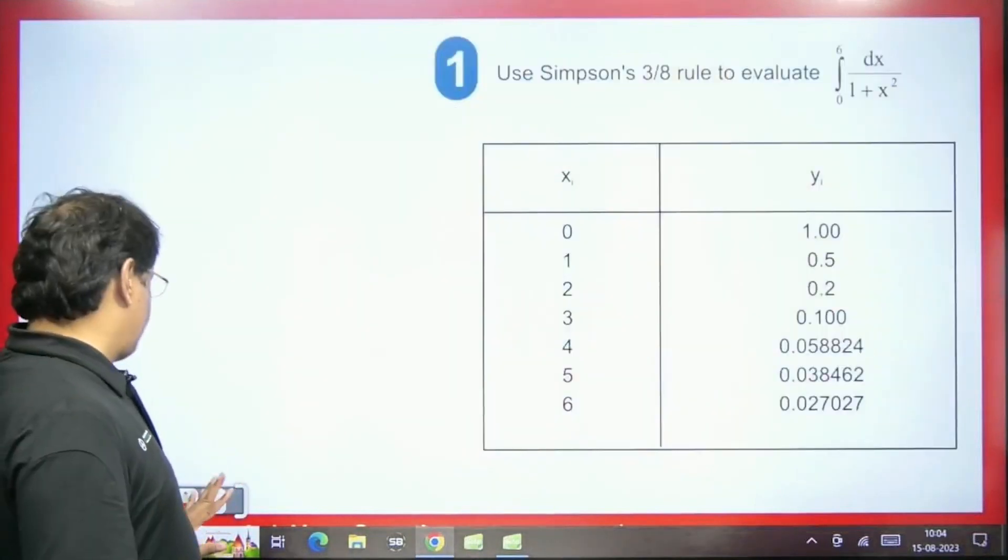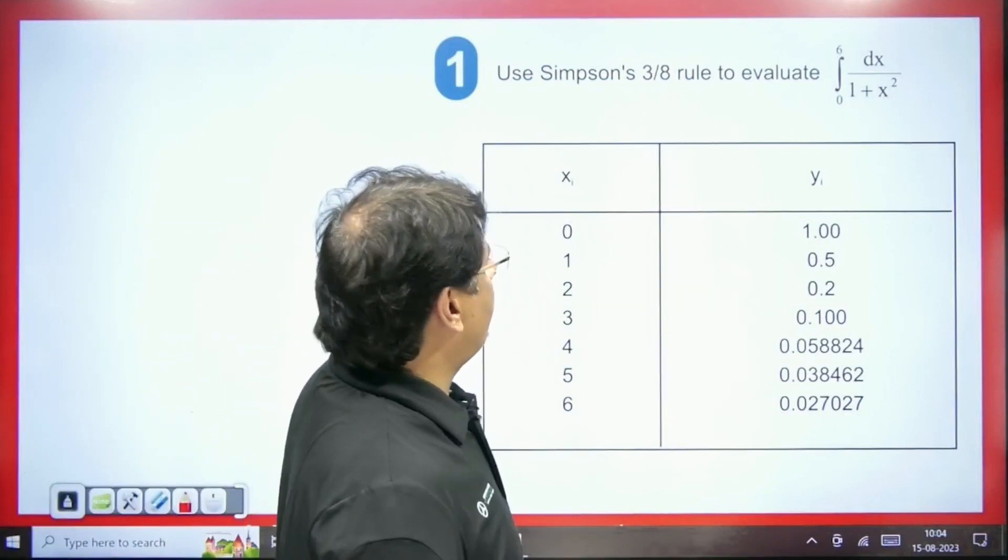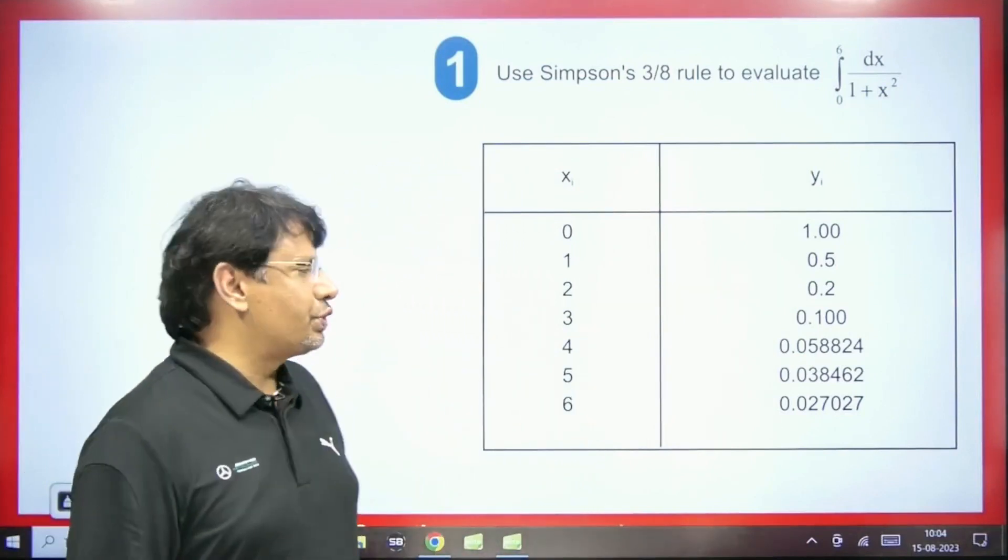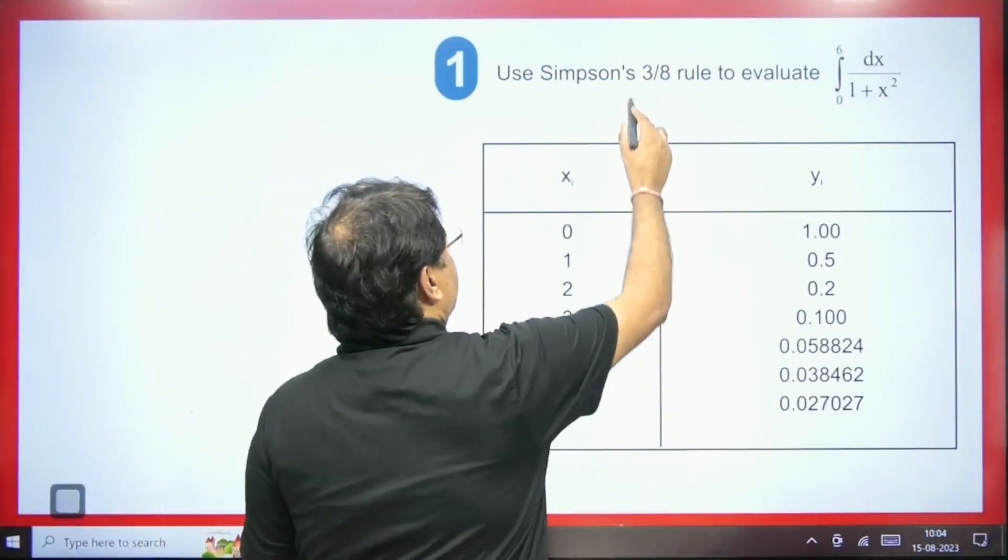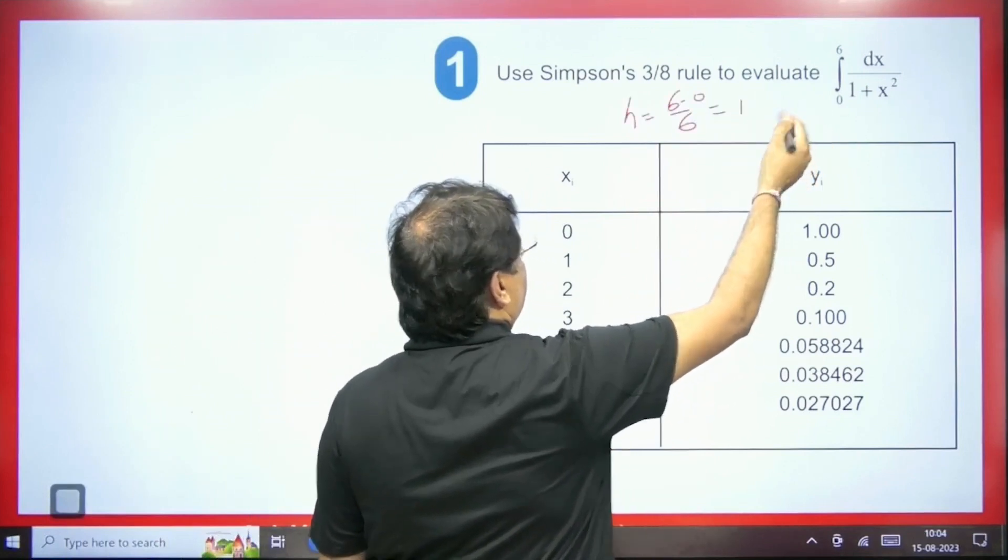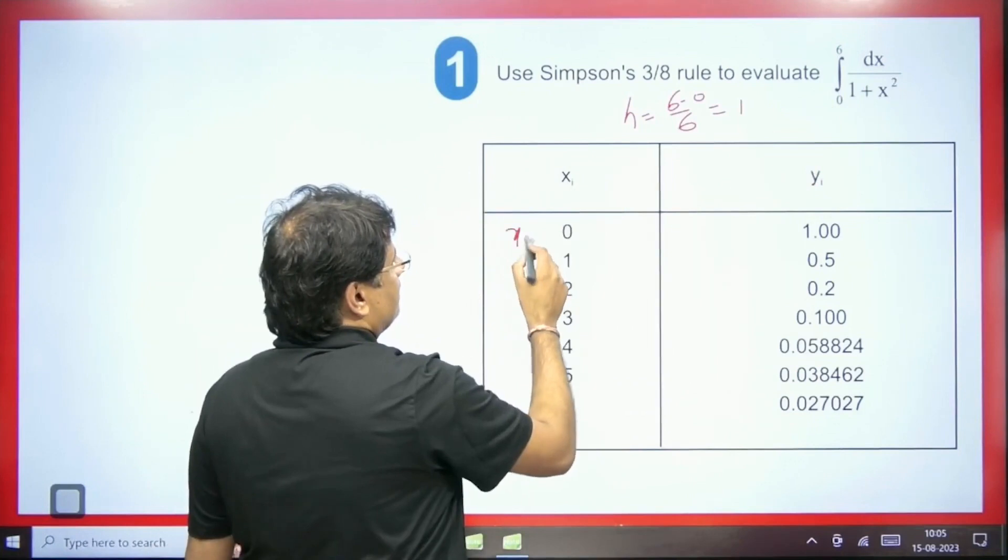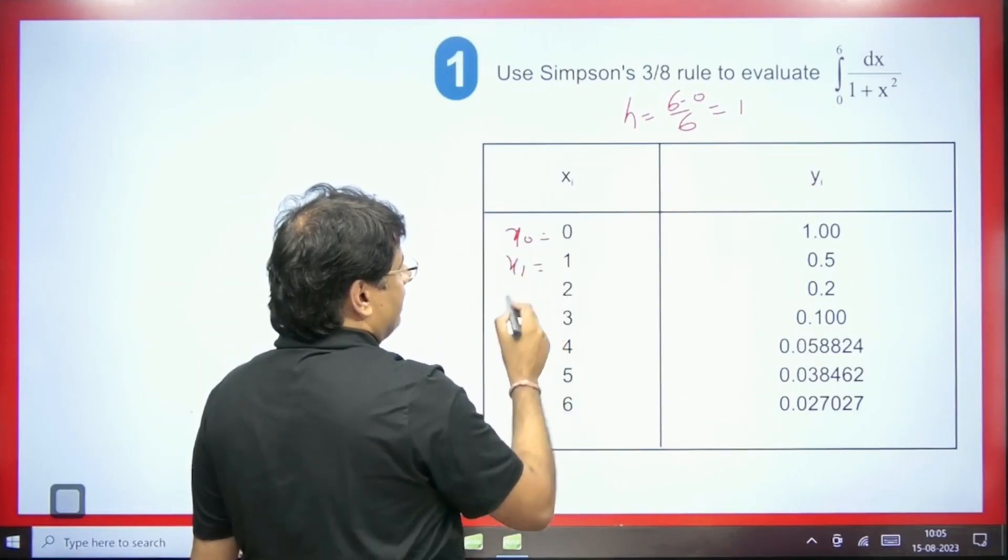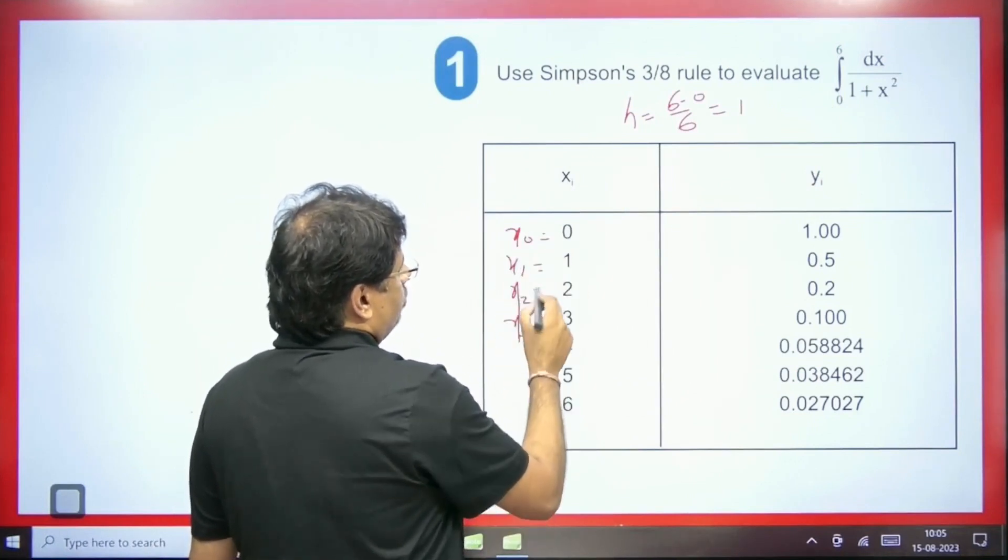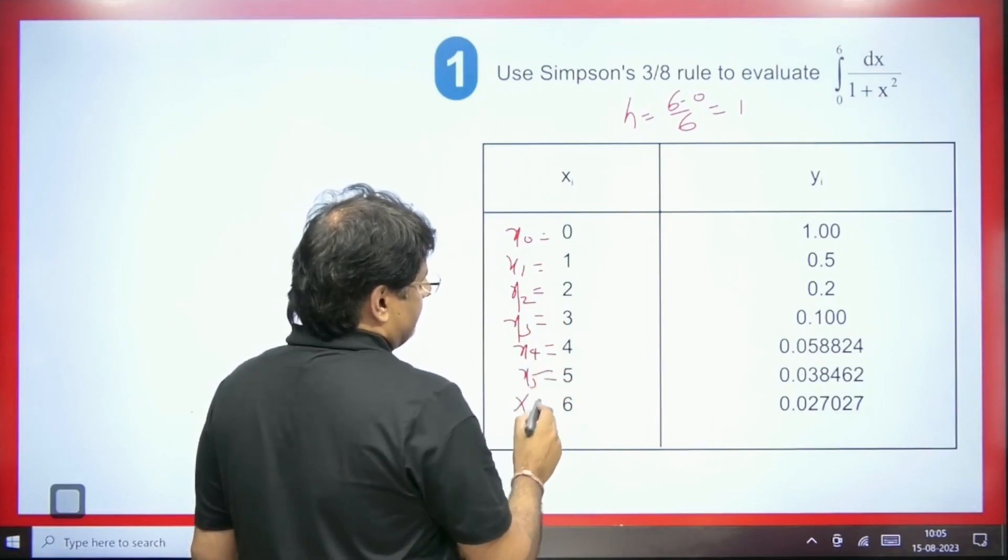See the next question we have it is saying that 0 to 6 dx/(1 plus x square) is given to you. So here we have to use Simpson's 3 by 8 rule. So we will calculate the value of h, upper limit minus lower limit divided by 6. It will be 1. Then the same thing. First we will start with x0, 0. Then here we will keep adding 1 to each. So here we will have x2, x3, x4, x5, and here x6.